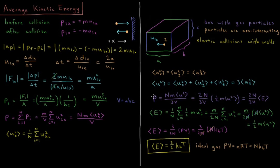We substitute ⟨U²⟩ for ⟨Uₓ²⟩ and include a factor of 1/3 to compensate. So the pressure of the gas equals (2N)/(3V) times (½m⟨U²⟩).